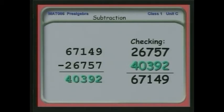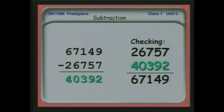You can always check your subtraction by taking the result, adding it to the number you subtracted, and you should get the number you subtracted from. So taking 26,757 and adding the result 40,392, we get the same original number. Subtraction is an inverse process, so you can always check it by adding.